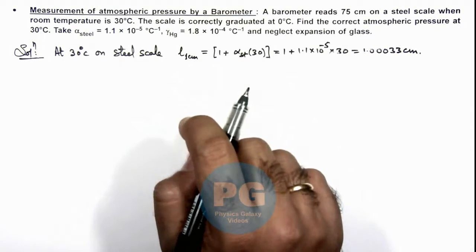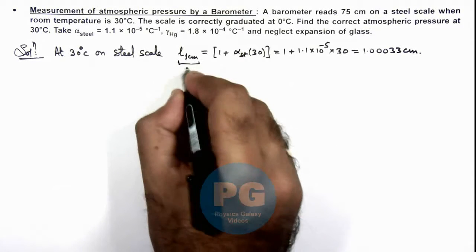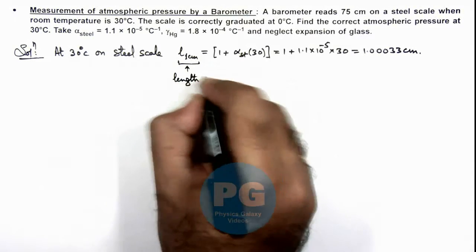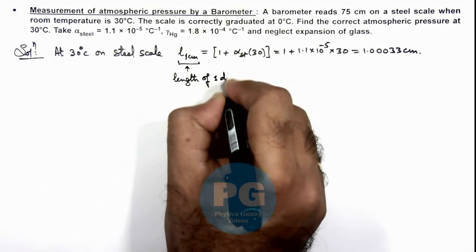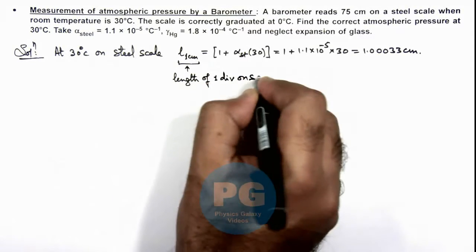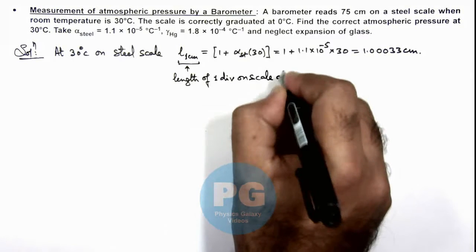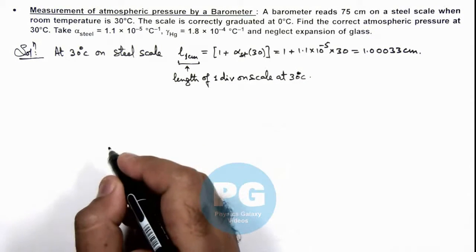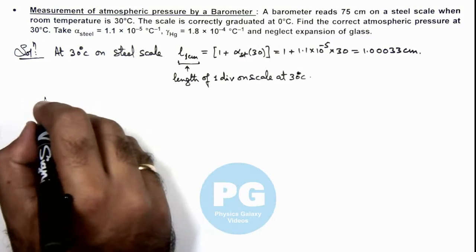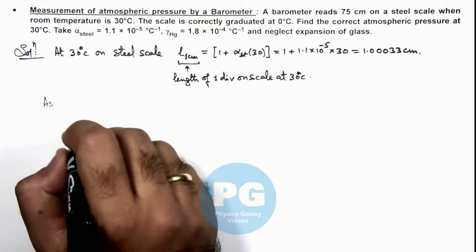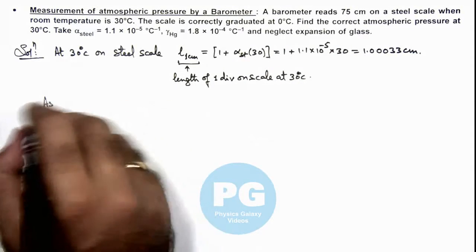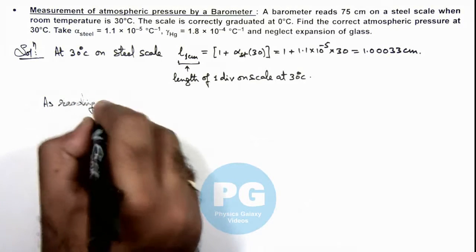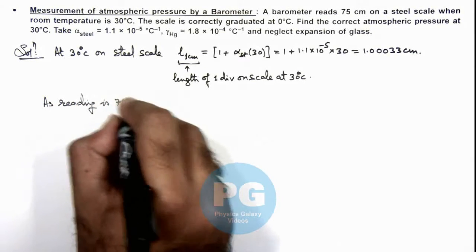On the steel scale, this length of 1 centimeter we can write as the length of 1 division on scale at 30 degree centigrade. Now, we are given in the problem that the reading is 75 centimeter.